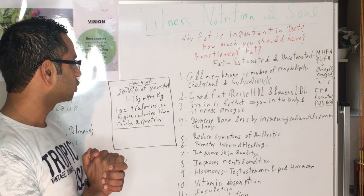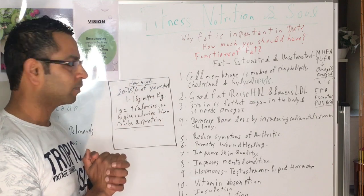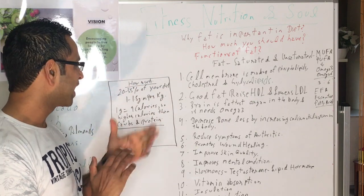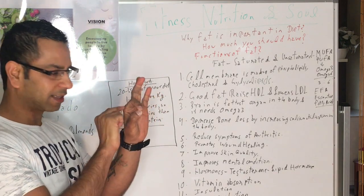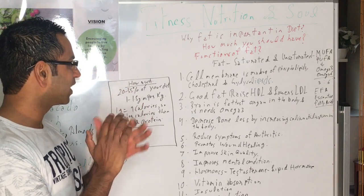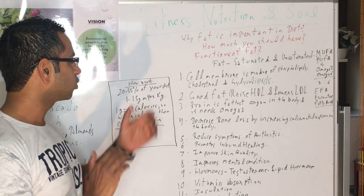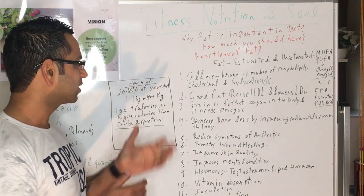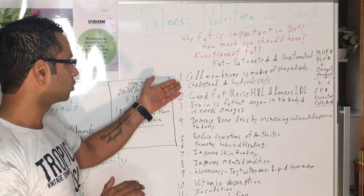The very first function of fat is your cell membrane. We've got around 70 trillion cells and every cell is made up of a membrane. This membrane, also known as plasma membrane, is made up of around 75% phospholipid, 20% cholesterol, and 5% glycolipids. As you can see, the cell membrane needs fat to make the plasma membrane.